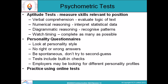Aptitude tests can include numerical reasoning with statistical data, and verbal comprehension where you evaluate words, logic, and text to test your comprehension and understanding ability. Numerical reasoning involves maths-related statistical data interpretation, and diagrammatic reasoning involves recognizing diagram patterns and solving problems. Watch your timings and complete as many questions as possible.